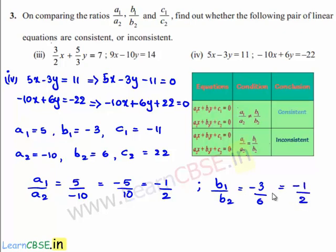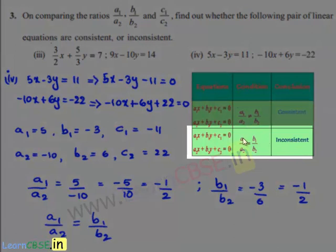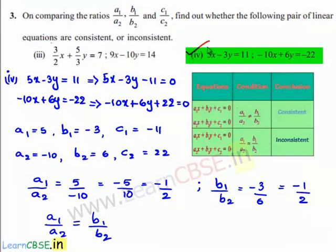Therefore, the values of a1/a2 and b1/b2 are both equal to minus 1/2. That is, a1/a2 is equal to b1/b2. By using the second condition, if a1/a2 is equal to b1/b2, we can conclude that the given set of linear equations are inconsistent.